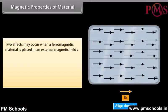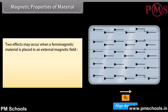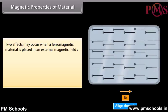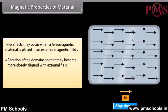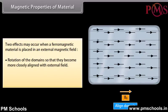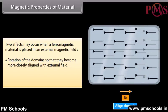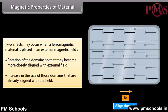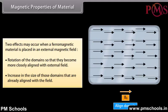Two effects may occur when a ferromagnetic material is placed in an external magnetic field: rotation of the domains so that they become more closely aligned with the external field, and increase in the size of those domains that are already aligned with the field.